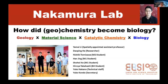Hello, I'm Ryuhei Nakamura, PI of the LC course. In our laboratory, we ask: how did geochemistry become biology? We are interested in integrating geology and biology in the context of the chemical origin of life. To fill the gap between geology and biology, we use our background in material science and catalytic chemistry, along with collaborators inside and outside ELSI. We are currently working mainly on two subjects.